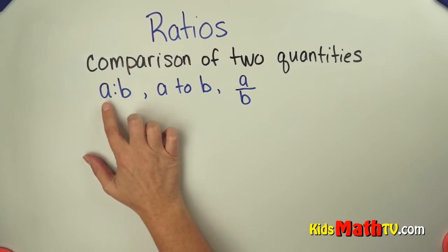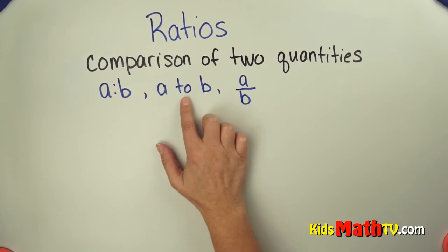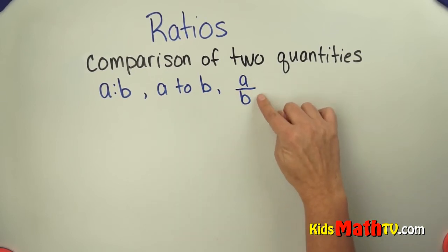A to B, it's read A to B with a colon, or A to B with the word to, or it can also be written as a fraction, A to B, or A over B.